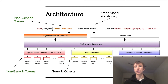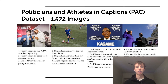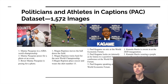Given this architecture, our primary difficulty was training the model to use the non-generic terms. This was a difficulty because many current image caption datasets don't include named entities. To overcome this challenge, we collected a new dataset which we titled Politicians and Athletes and Captions. This dataset consists of 1,500 images of various individuals from around the world.